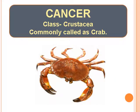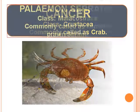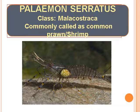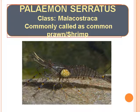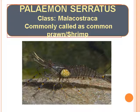Cancer — Class Crustacea, commonly called as Crab. Palaemon Serratus — Class Malacostraca, commonly called as Common Prawn or Shrimp.